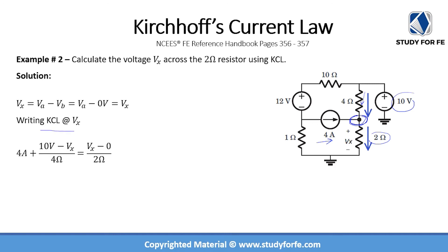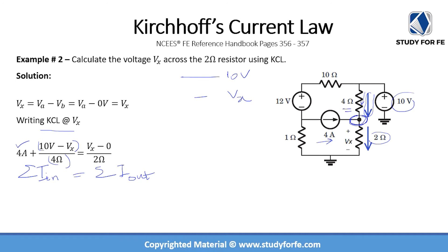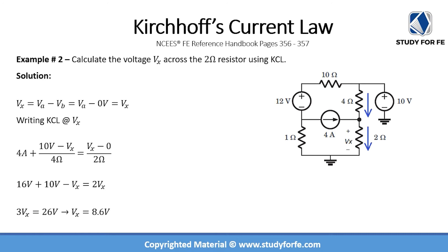We can set up the KCL equation as follows. The sum of current entering equals I_in, and the sum of current leaving equals I_out. The first entering current is 4 amps from the current source. The second is 10 volts minus VX divided by 4 ohms — current flows from the higher voltage of 10 volts to the lower voltage VX. On the right-hand side, the current leaving is VX minus 0 volts divided by 2 ohms.